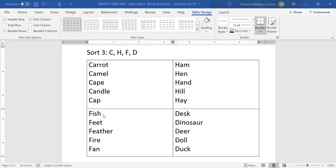In f, we have fish, feet, feather, fire, and fan.